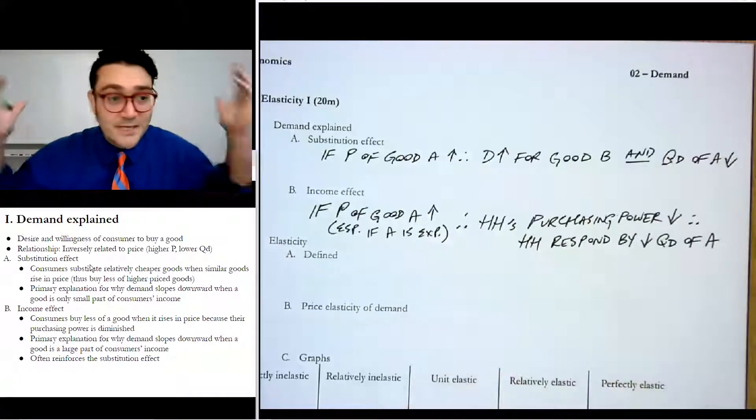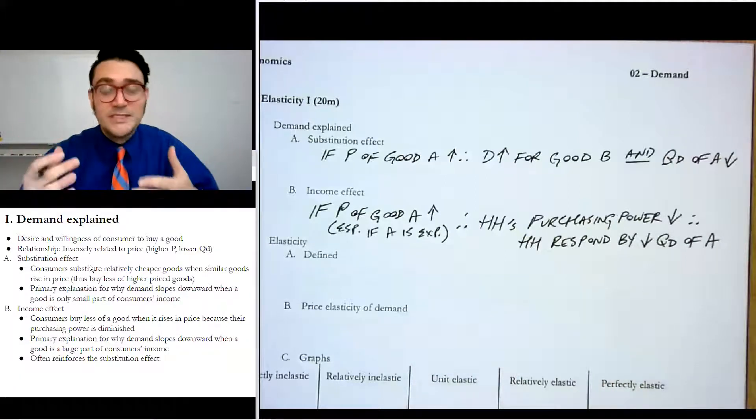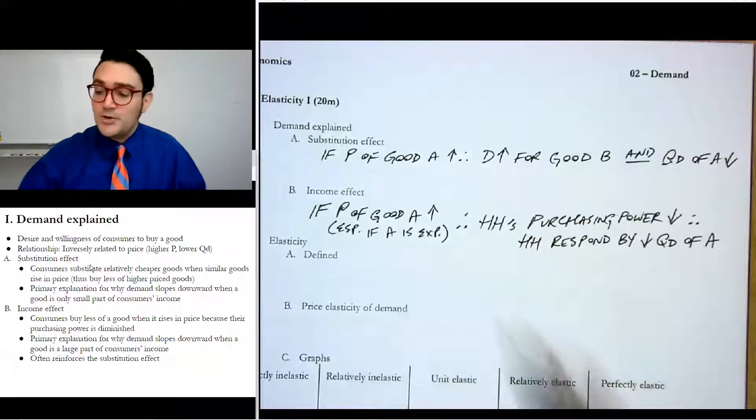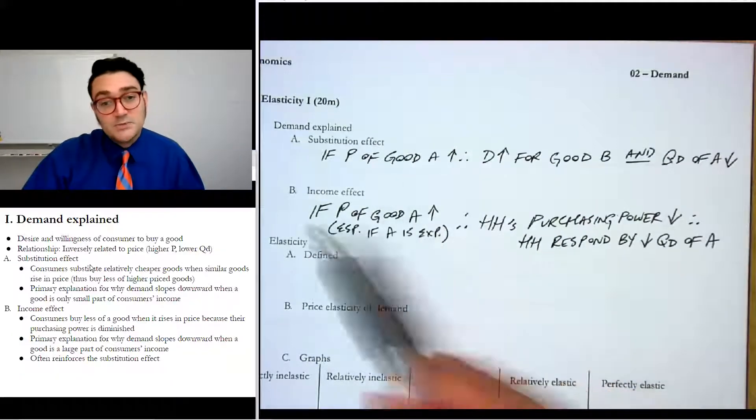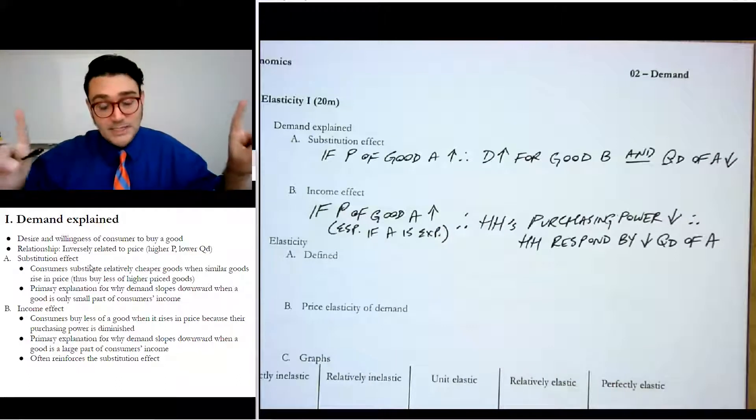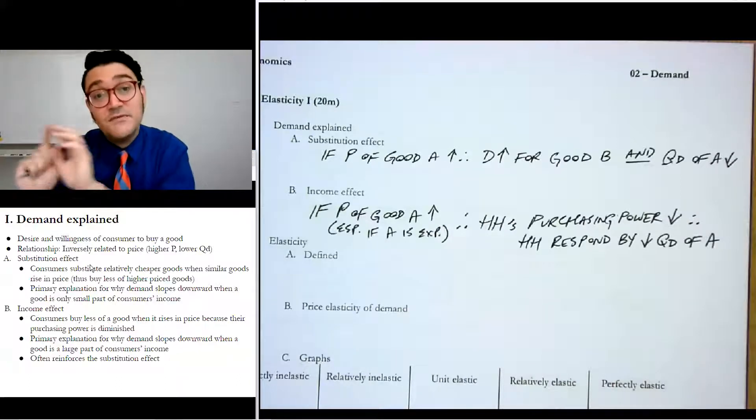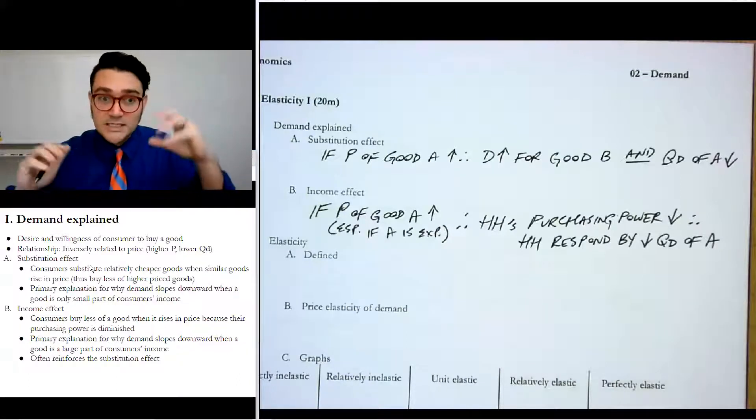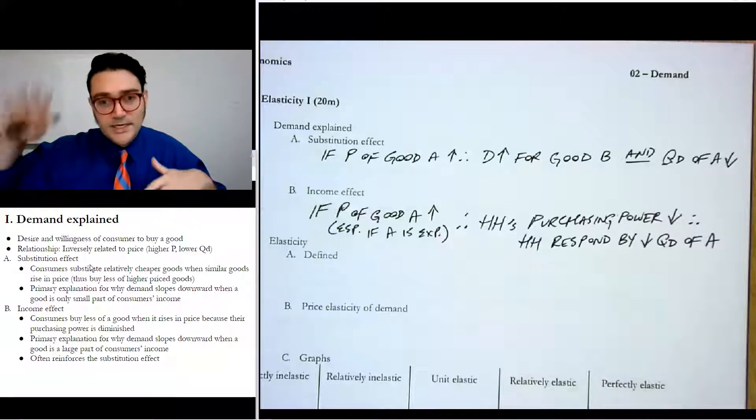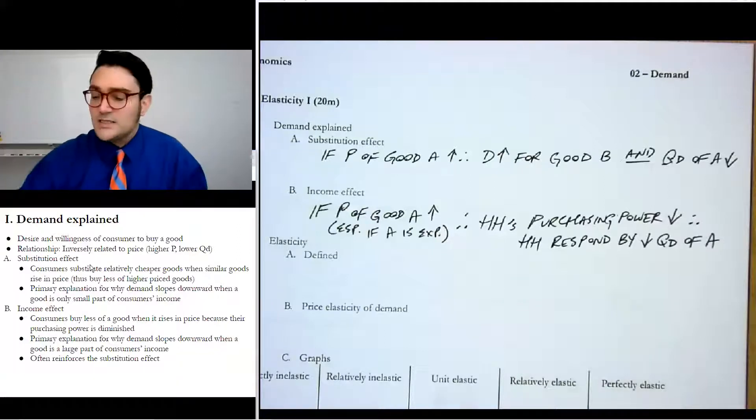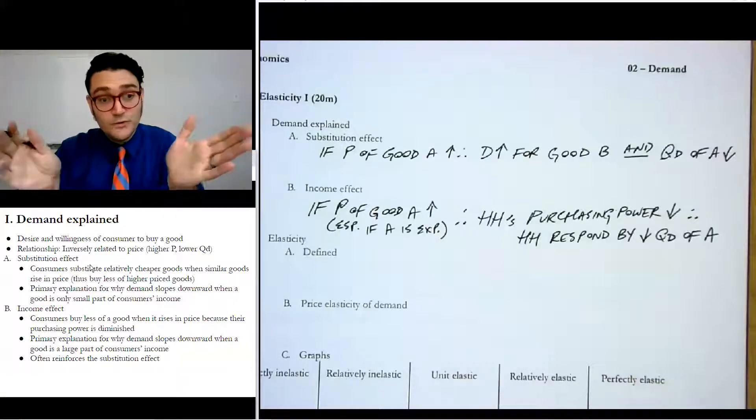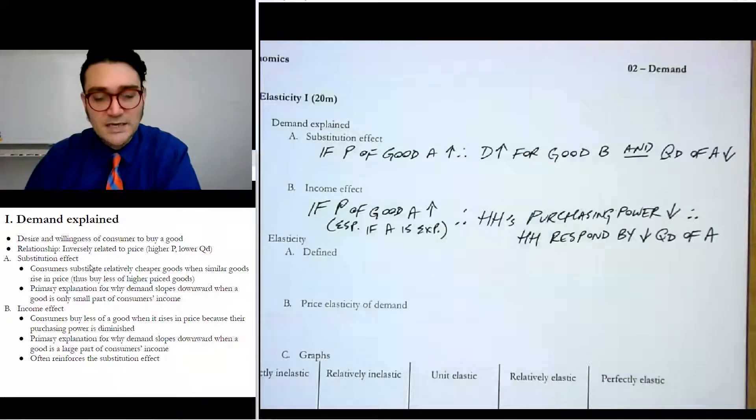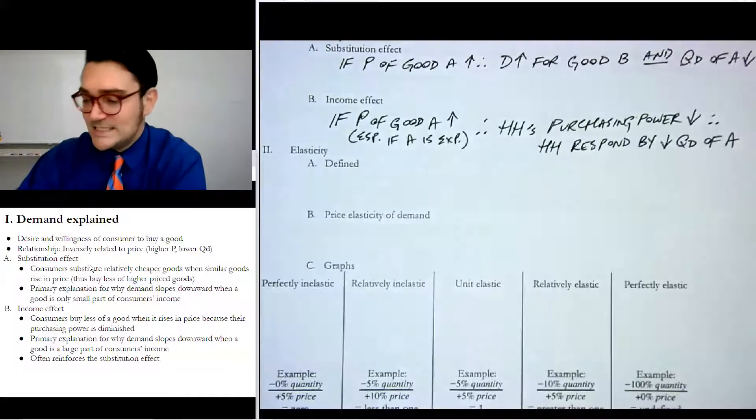Now, normally nine times out of ten, these two things are both reasons why demand is downward sloping. But your book has some very interesting examples where what happens if they move opposite each other, especially if the good is inferior, where your income rises, but you're buying less of the product. So check out your book for some interesting examples where maybe they don't always move in the same direction. Now let's talk about elasticity.